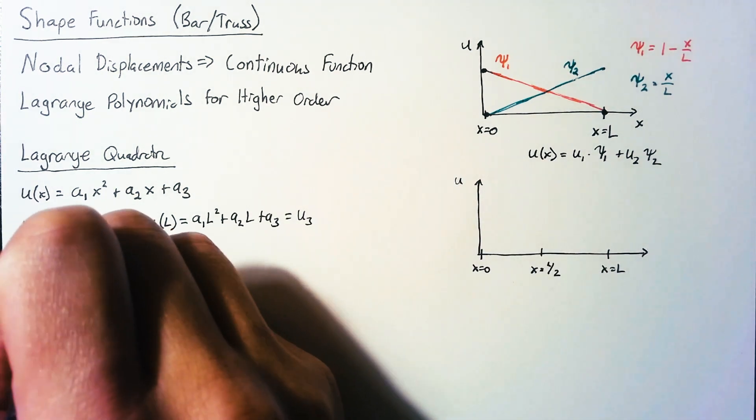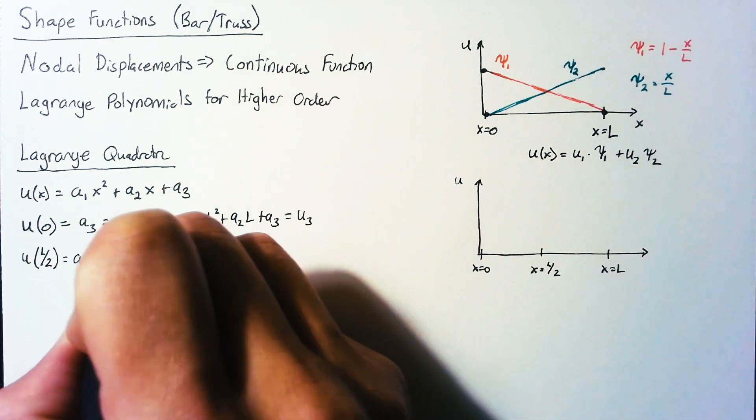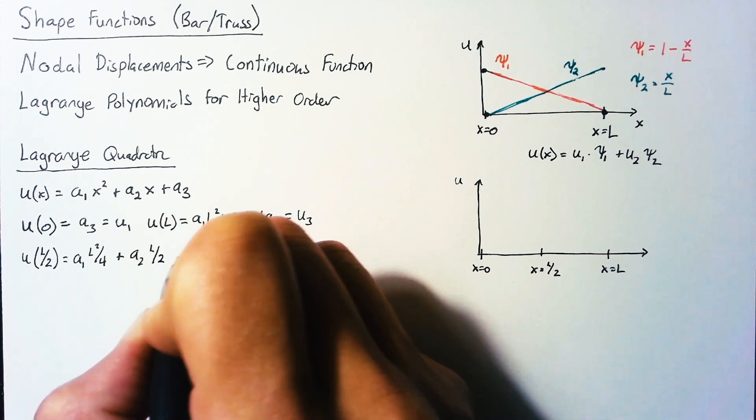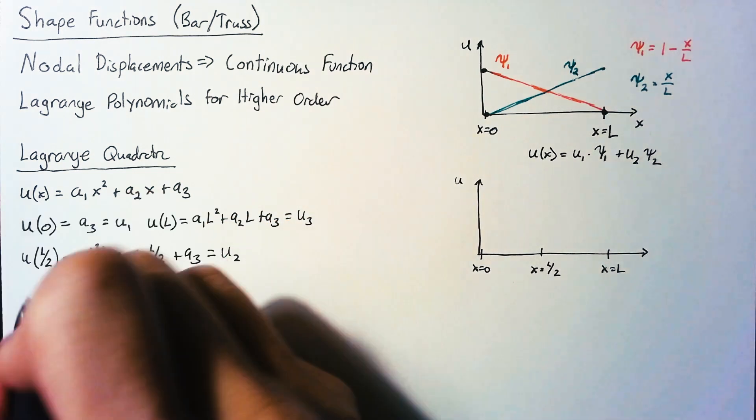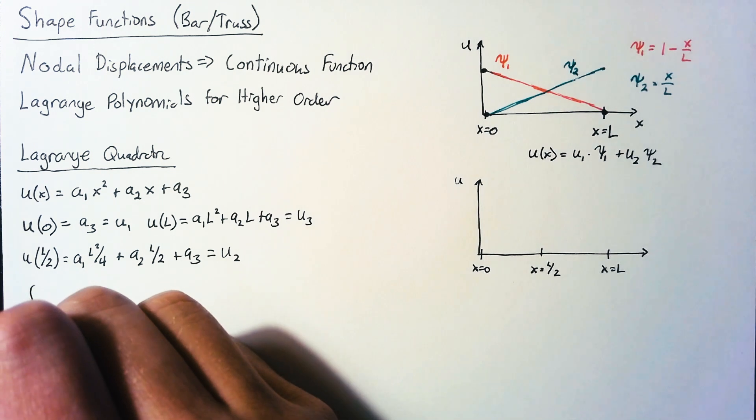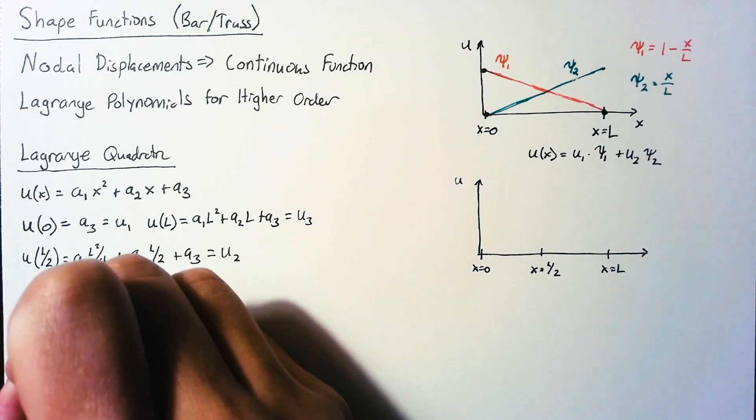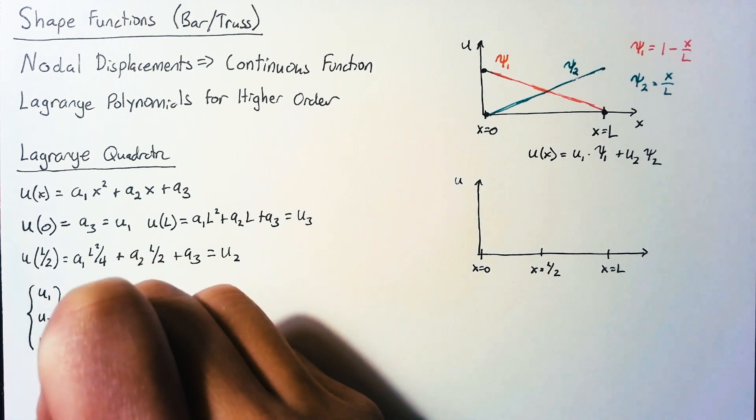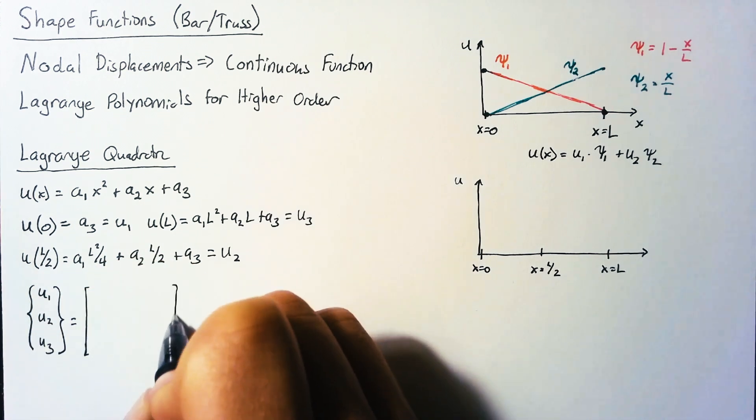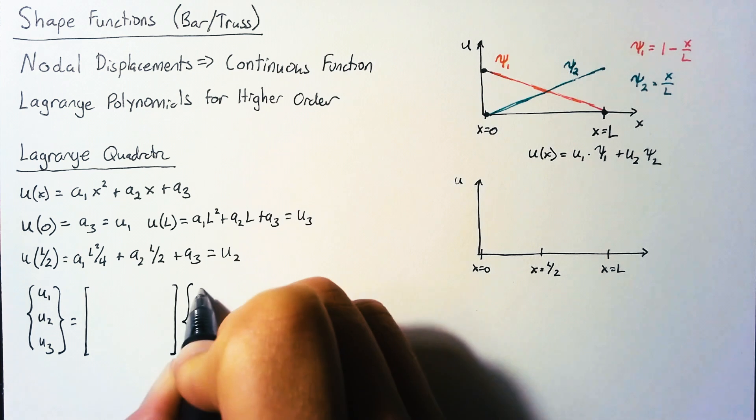Then finally, we have u of l over 2, which we can plug in and set equal to u2. So now we have a system of three equations to solve and three unknowns. You can do this a number of ways. My favorite is just to set up the matrix system of equations and solve it that way.